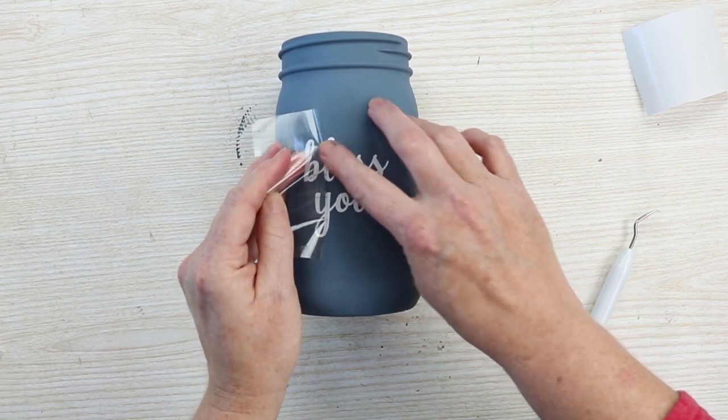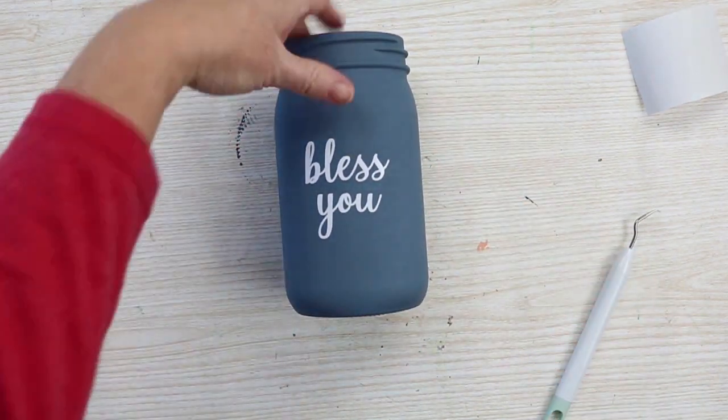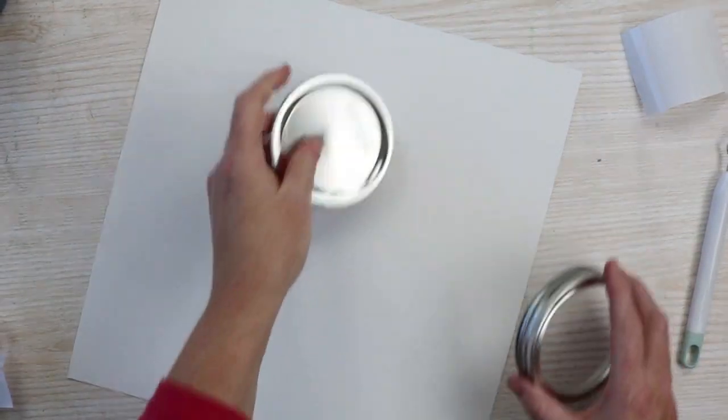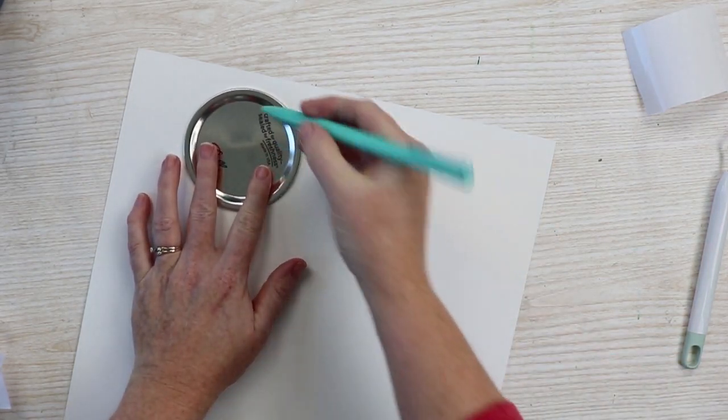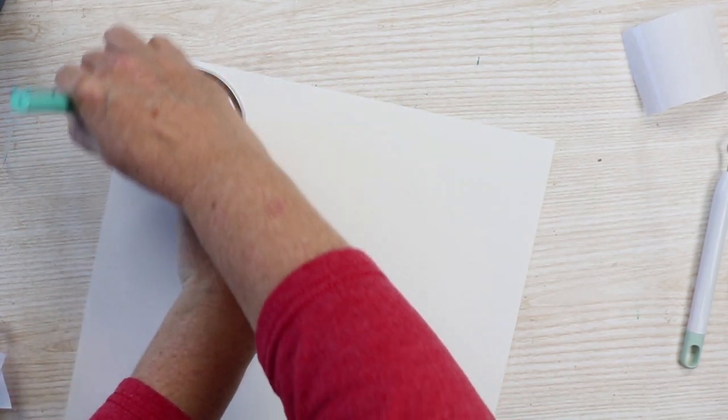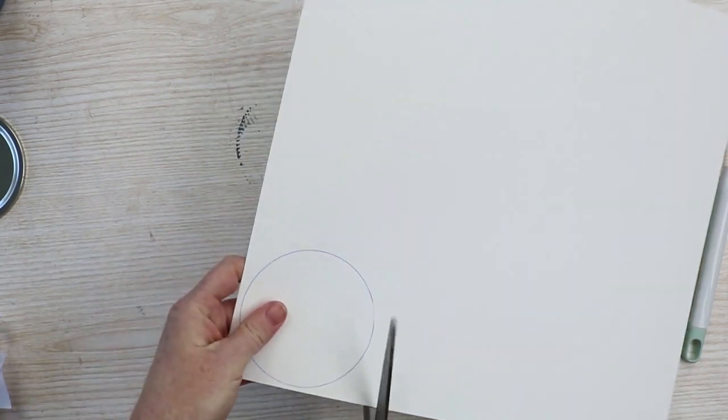After we apply this vinyl, we just press it down well and our jar is ready. Now we need to make a topper for the mason jar. We want something that the tissues will come out of easily. This is just white cardstock and I'm going to trace around the mason jar lid that I took off, and then I'm just going to cut around that with a pair of scissors.